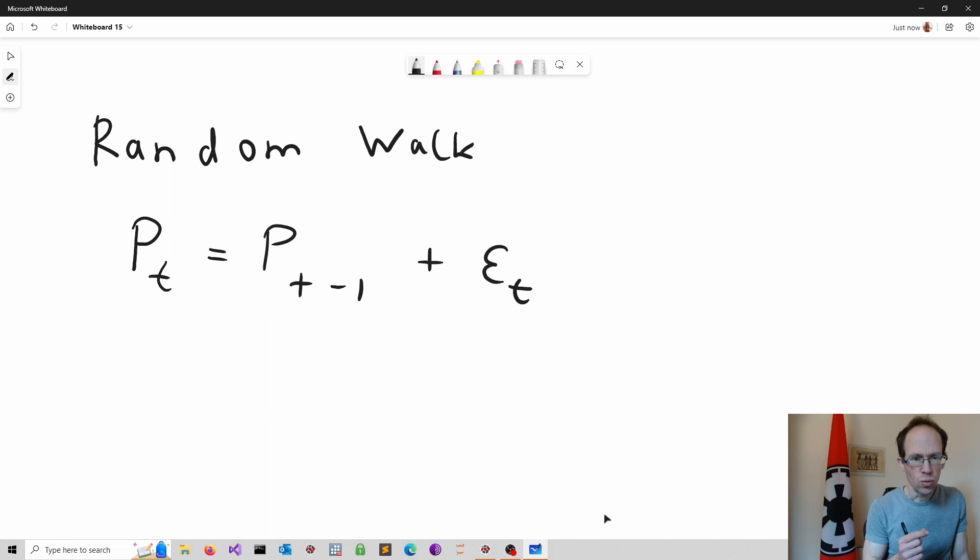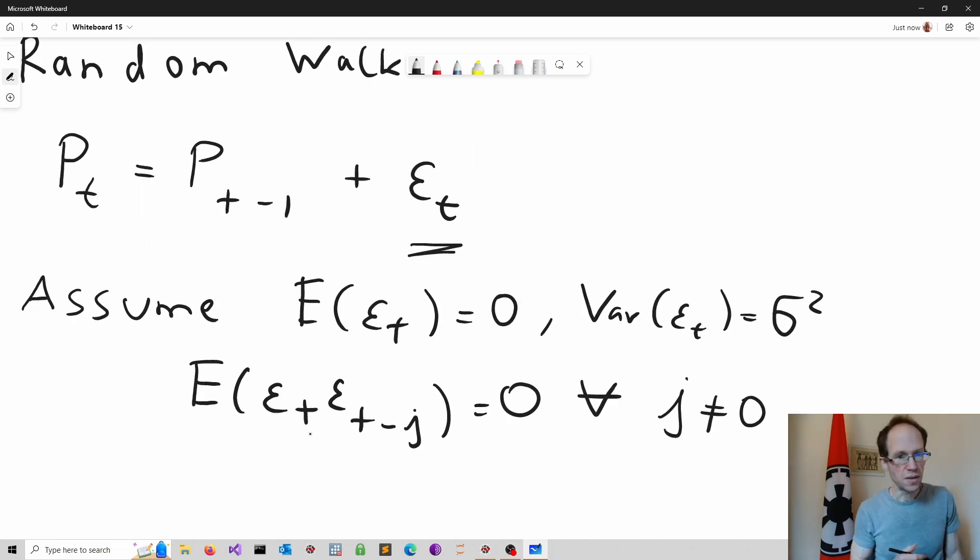We make a few assumptions regarding the random process epsilon t. The expected value is equal to 0 and it has constant variance. In addition, past realizations are independent from current realizations. So these assumptions can be summarized as on the whiteboard.